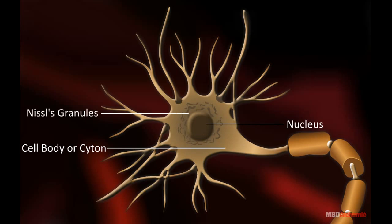Nissl's granules are a number of small basophilic granules of various shapes found in neuroplasm. Dendron are the branched projections of a neuron that act to conduct the electrical stimulation.